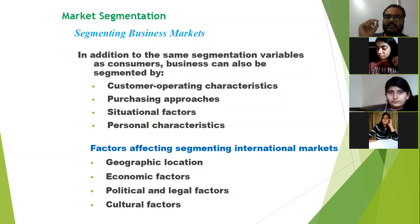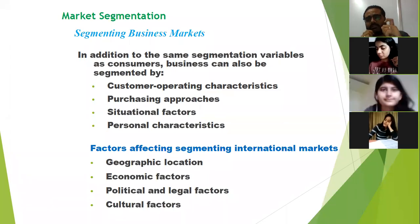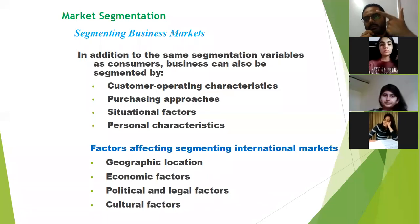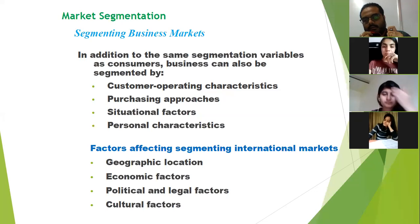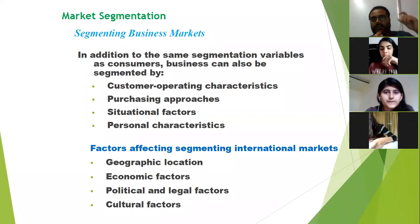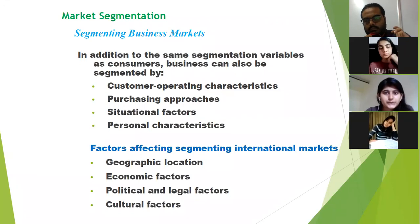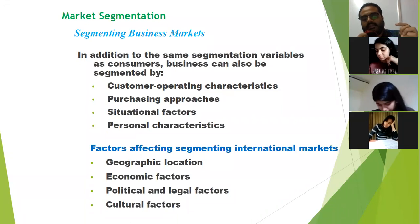There is another category of segmenting business markets — industrial markets. This particular market caters specifically to industries. It can be for the supply of raw materials, supply of machinery or equipment, or the creation of infrastructure. Always remember that it is not necessary that one business will only belong to one category — it can belong to more than one. For example, a factory supplier is a B2B model, but at the same time it is also part of the industrial market because it is supplying raw material to the industry.